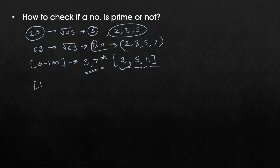For numbers from 100 to 200, in addition to checking with 3 and 7, also check with 13. If the number is not divisible by any of 3, 7, or 13, it is prime. Again, the condition is that you can already spot multiples of 2, 5, and 11 by sight.